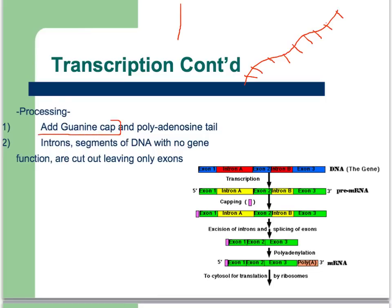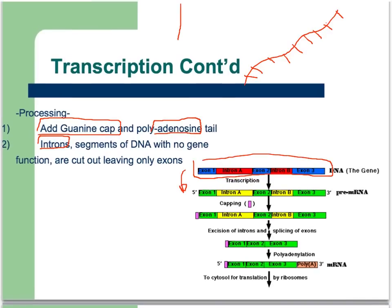One is a guanine cap has to be added — those little guanine parts are going to be there. The other thing is that a bunch of adenosines are going to be added. So two parts for the processing that are added. And then certain sections of DNA that didn't really have a function for this protein have to get cut out — they're called introns. So introns get cut out, the guanine cap is added, and then we add our adenosine tail. Now it's fully functional.